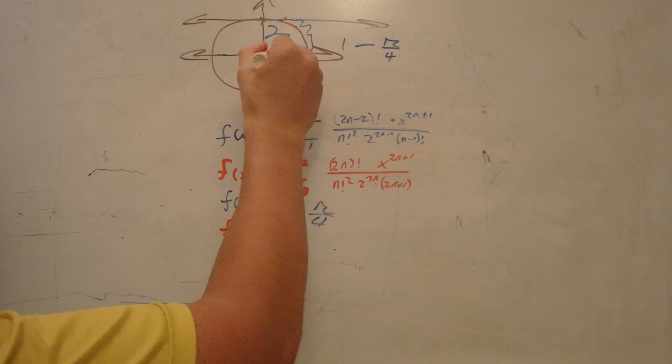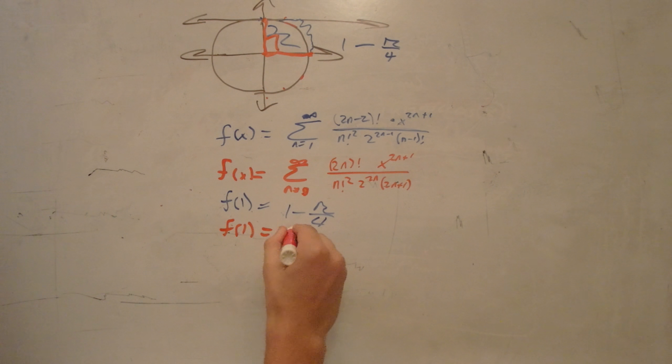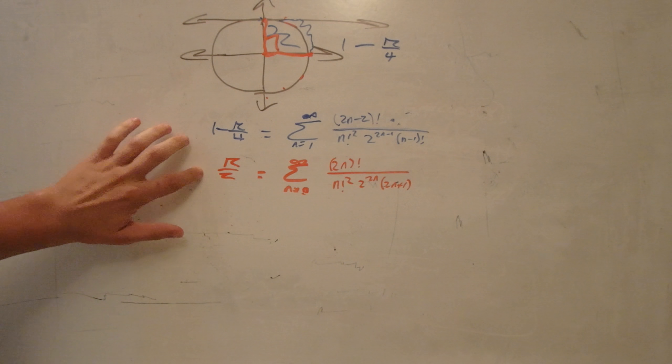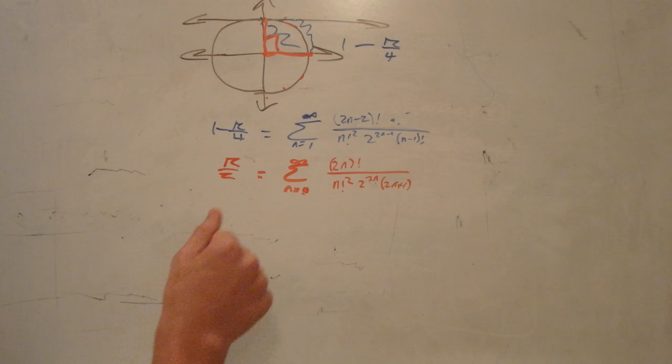f of 1 is this 90 degree angle right here. Well, that's also equal to pi halves. 1 to any power is 1, so we can just get rid of these x values right here. From here, we can multiply both sides by 2, and when you look at that, we have a series for pi.